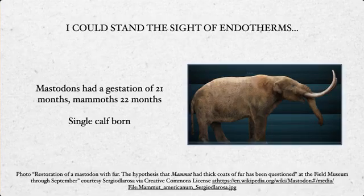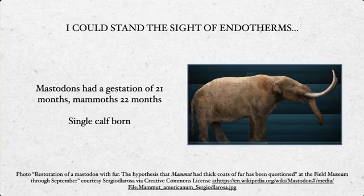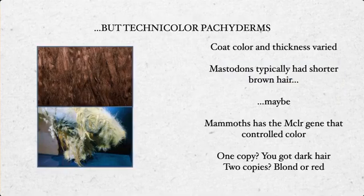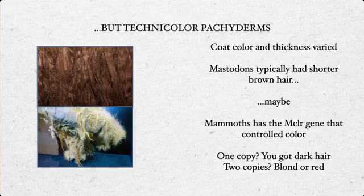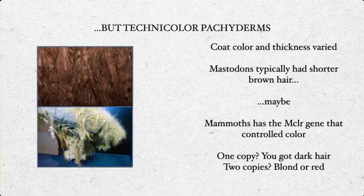Mastodons had a gestation of 21 months, with mammoths a close second at 22 months, after which they most likely had a single calf — in very rare instances there is some evidence for twins. Coat color and thickness of either species varied. Mastodons typically had shorter brown hair, maybe. Mammoths had a gene, MCLR, that controls color, much like eye or hair color in humans. If you had one copy of this gene, you got dark hair; if you were a mammoth with two copies, you got blonde or red hair.